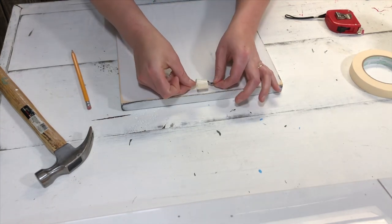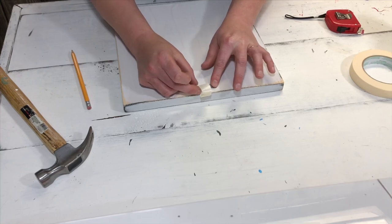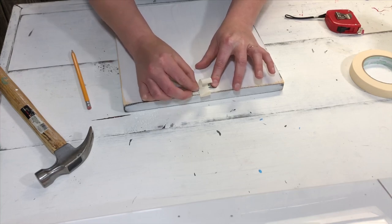You don't want it to be offset at all, that way it will hang straight on your wall. The masking tape is going to hold that sawtooth hanger in place so that it stays put whenever you go to hammer in your nails.